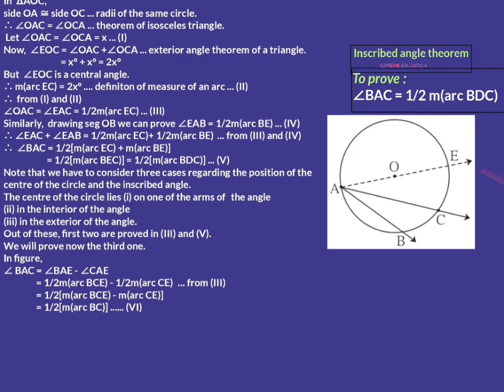Hence, measure of an inscribed angle is equal to half of the arc intercepted by it. This is the inscribed angle theorem. Thank you.